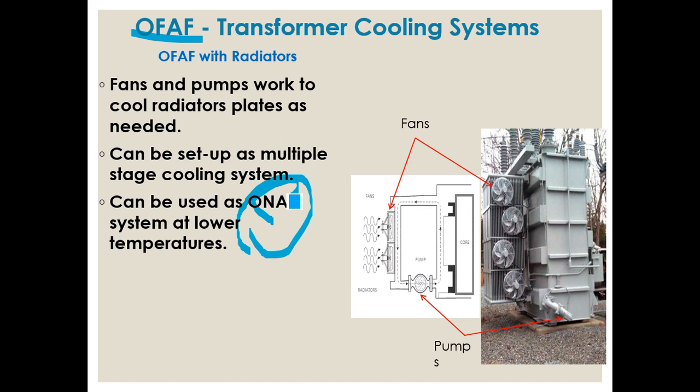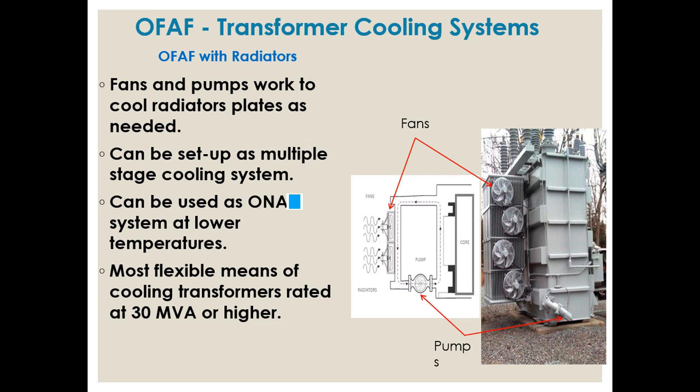You can switch off the fan or oil pump and then use the transformer as ONAN - oil natural, air natural. This gives you flexibility. Transformers up to 30 MVA can use this configuration with the fan and oil pump providing flexibility.